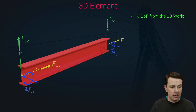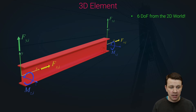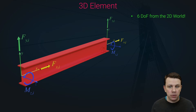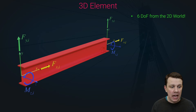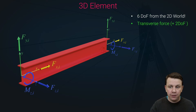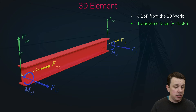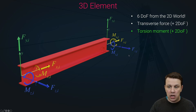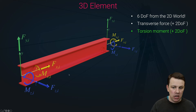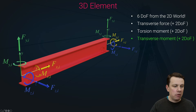It becomes very obvious when looking at a 3D element that those moments are about the z-axis. Those are the degrees of freedom we already know. Now we have to think about what additional degrees of freedom are needed to fully describe 3D behavior. First, there are two additional transverse forces: a force in the z-direction at node i and node j. On top of that, we add a torsional moment: Mxi and Mxj.